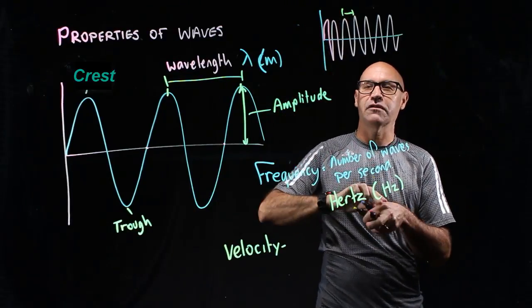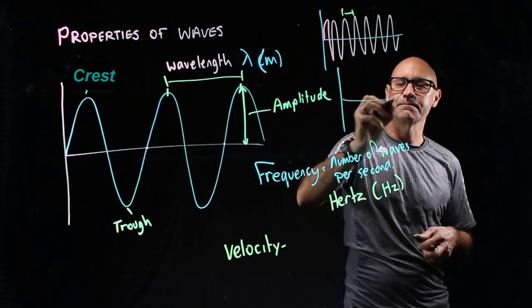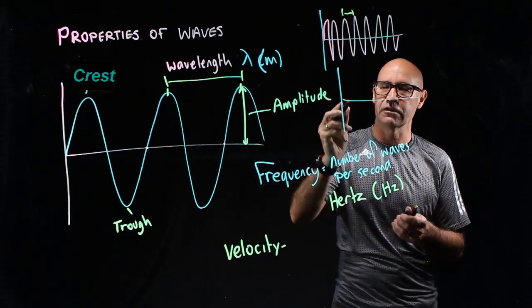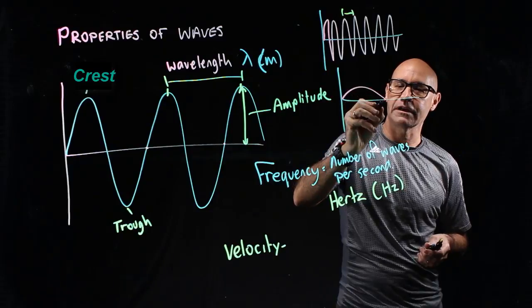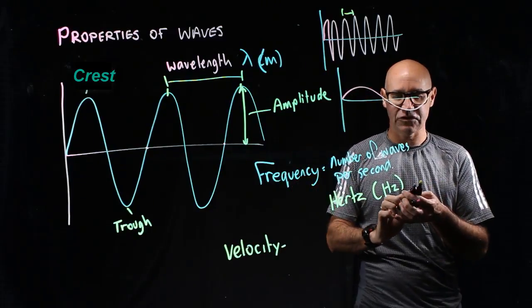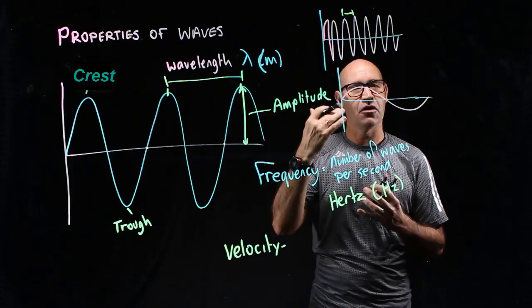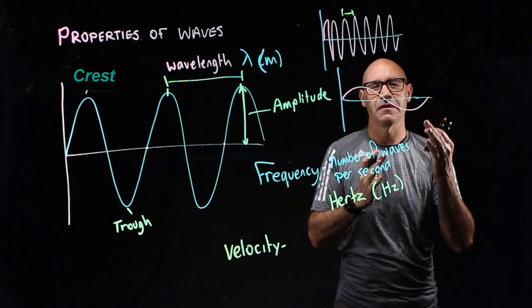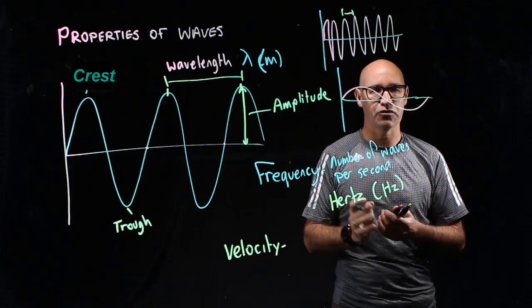If we do something different, one that's got a long wavelength, you'll see that it's actually got a low frequency. High wavelength, low frequency—they're inversely proportional.